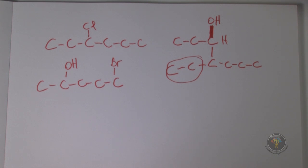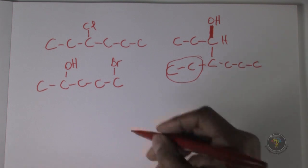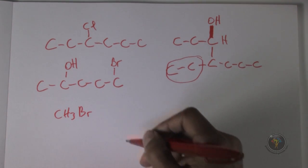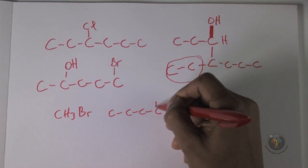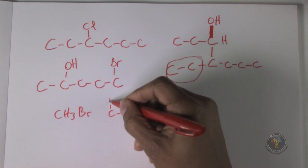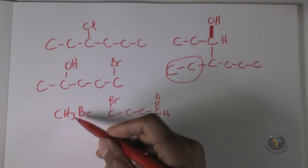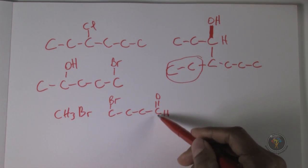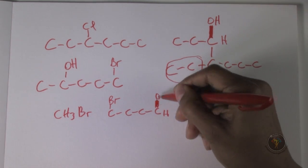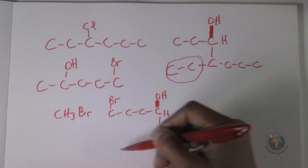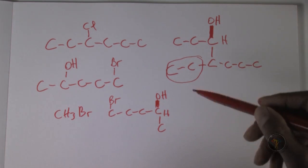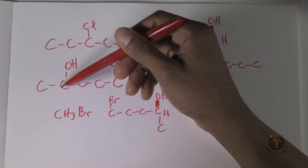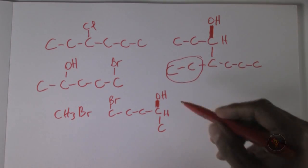Testing answer A: methyl bromide as Grignard reagent plus 4-bromobutanal (butanal = 4 carbons, bromo at position 4). Methyl bromide becomes delta-negative, attacks the carbonyl carbon, electrons go up to become OH. The resulting compound: 1-2-3-4-5 carbons, OH at position 2, bromine at the end — this matches exactly. Answer A looks good.